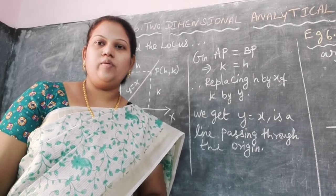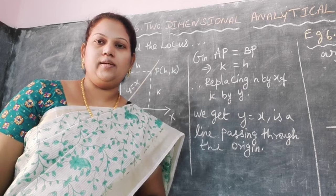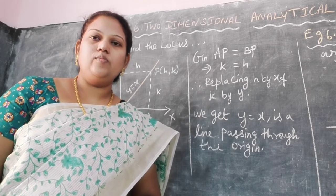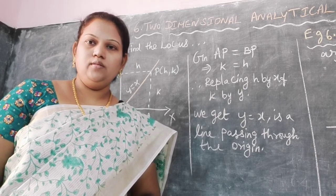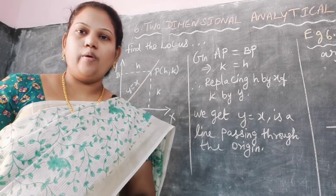Hi students, today we are going to see Chapter 6: Two-Dimensional Analytical Geometry. Here we see the definition of point and locus. Next we see example 6.1.